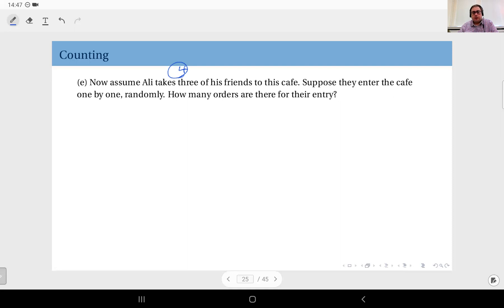Suppose they entered the cafe one by one but randomly. Again, how many orders are there for their entry? So let's say the first one through the door is, let's say, Ali, and then friend number one, then friend number two, friend number three—this is one possible order.